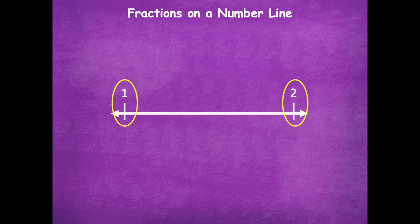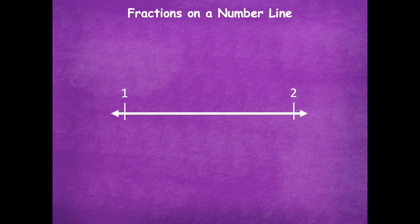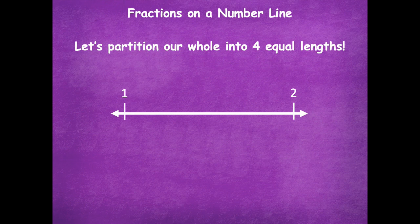Here we have a number line with the endpoints of one and two. Where has the zero gone on our number line? It's before the one. This arrow in front of the one tells us that our number line is going to keep going backwards, and the arrow after the two tells us that our number line can continue to go on. So really what we're doing is cutting a chunk out of the number line and focusing on this one part between one and two.